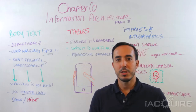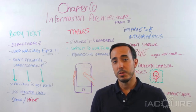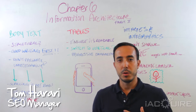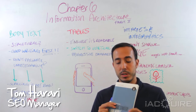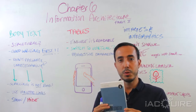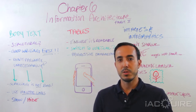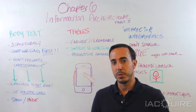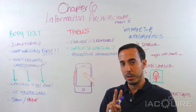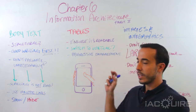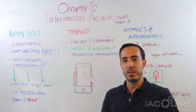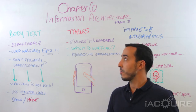Hey everybody, welcome back to another edition of Cliff Notes Tuesday here at iAcquire. My name is Tom Harari, I'm the SEO manager here, and we're going to be doing Karen McGrain's Content Strategy for Mobile. You've been with us already for a few chapters, so let's get into it. We're doing chapter six, Information Architecture, Part Two. Last week you were probably left with a little bit of a cliffhanger — not to worry, we've got you covered.